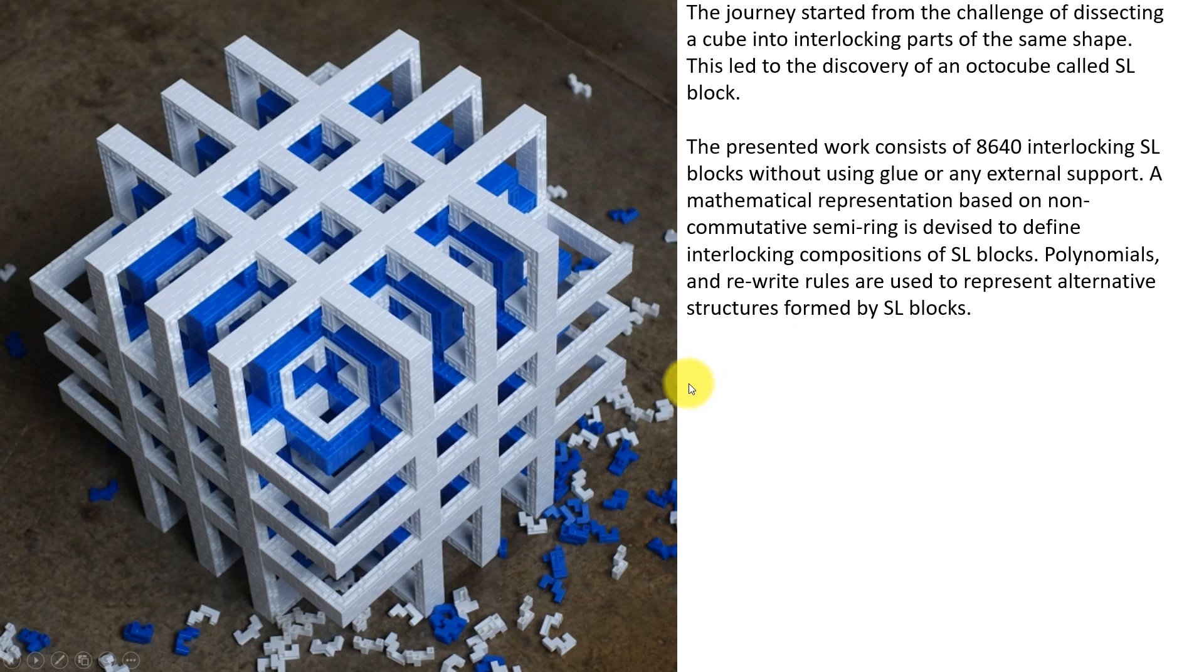This is one example of SL-strand composition. This presented structure consists of more than 8000 interlocking SL blocks without using glue or any external support. We use a mathematical representation based on non-commutative semi-ring to define interlocking compositions of SL blocks.